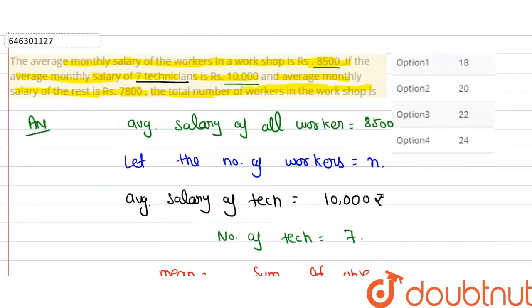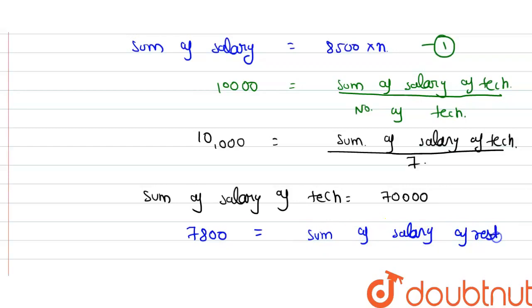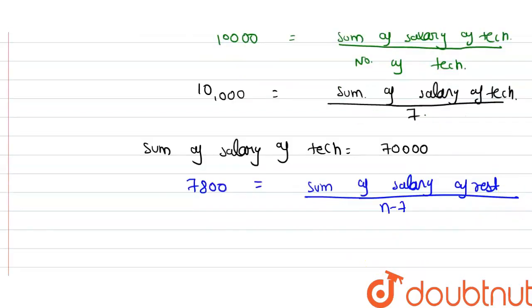और क्या given है? कि rest जितने भी workers हैं उनकी average salary कितनी है? 7,800. तो 7,800 = sum of salary of rest workers / (N-7). Total N workers में से 7 technician हैं, तो बचे workers हैं N-7. तो sum of salary of rest workers = 7,800 × (N-7). इसे हम equation 2 और equation 3 लेते हैं।